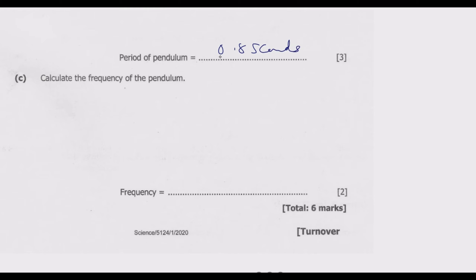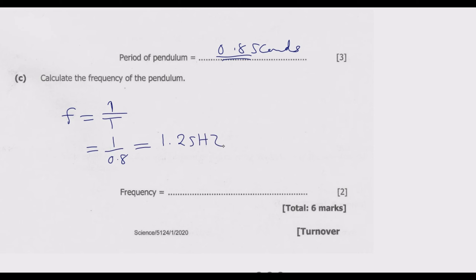Question C: Calculate the frequency of the pendulum. Frequency is equal to 1 over the period — there is an inverse relationship between frequency and period. Since the period is 0.8 seconds, the frequency is 1 divided by 0.8, which gives 1.25 Hz. Once you get these correct you earn those marks.